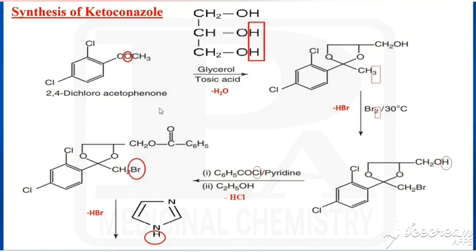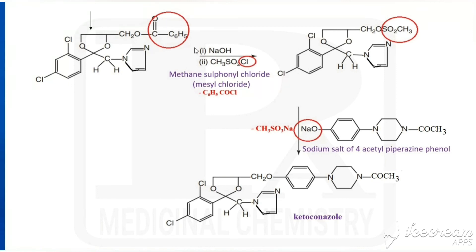To summarize: first, 2,4-dichloroacetophenone is treated with glycerol in the presence of p-toluenesulfonic acid, with removal of one molecule of water, giving a dioxolane derivative. That undergoes bromination to give a bromo derivative. Then treatment with benzoyl chloride gives an ester, and treatment with imidazole — removing HBr — gives an imidazole derivative. Treatment with methanesulfonyl chloride removes the benzoyl group and introduces SO2CH3. Finally, treatment with the sodium salt of 4-acetylpiperazinyl phenol gives ketoconazole.